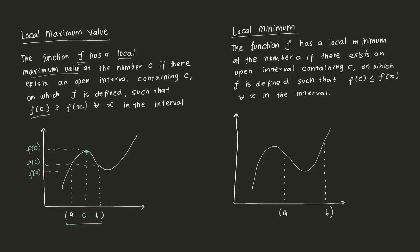A local minimum functions in a very similar way. A function f has a local minimum value at a number c, where c is here, on which the function is defined such that the value of the function evaluated at c is less than or equal to all other potential values of x evaluated with the function in that interval. In this case, f(c) is lower than the value of f(a) and f(b), so along that interval it is the lowest value — or at least less than or equal to the lowest value.